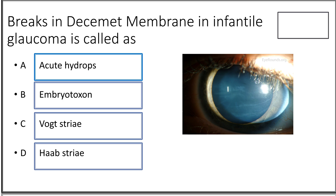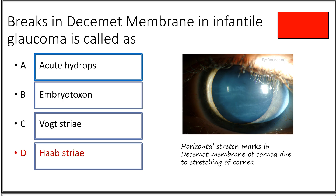Second question: breaks in Descemet's membrane in infantile glaucoma are called — option A acute hydrops, option B embryotoxon, option C Vogt's striae, option D Haab's striae. The answer is option D, Haab's striae. Haab's striae are the horizontal stretch marks in Descemet's membrane of the cornea due to stretching of the cornea.